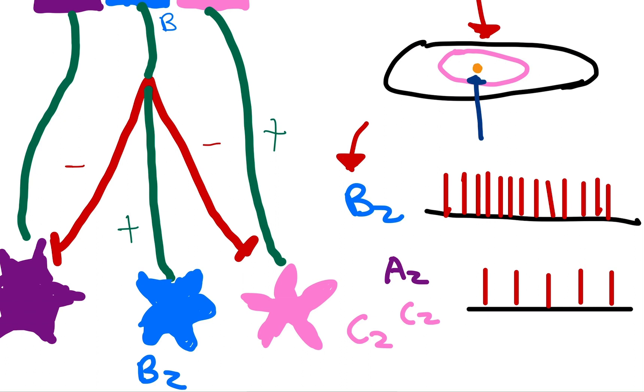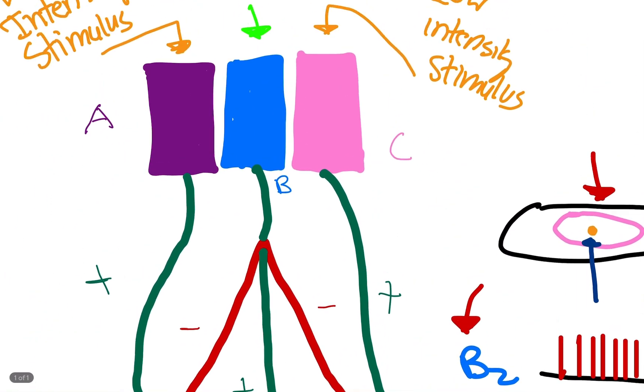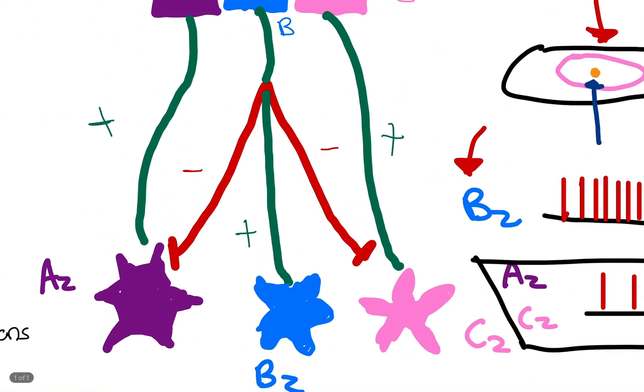So A2 and C2, yeah, they're firing action potentials. That's fine. So we know it helps us kind of know, okay, that surrounding area kind of hurts. We feel pressure, but that's not exactly where the stimulus is coming from. We feel it at B2, right? The epicenter. Because that's where the most action potentials are. And the reason there's less action potentials here for A2 and C2 is because B is inhibiting A2 and C2. It's basically telling them, hey, shut up.